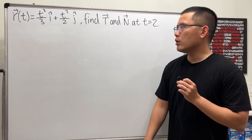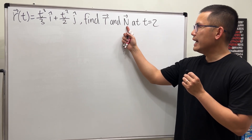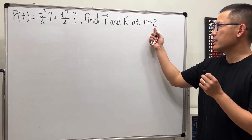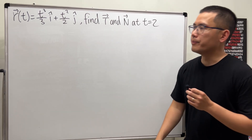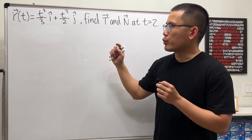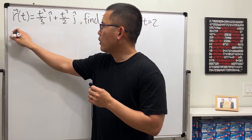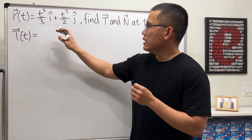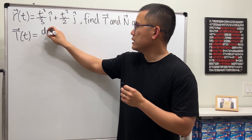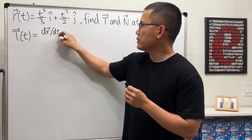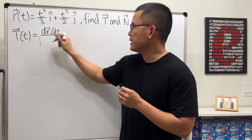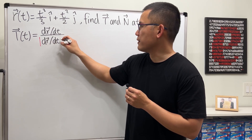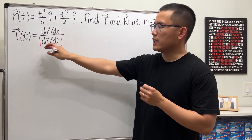I would like to show you another example of finding the unit tangent vector and the unit normal vector, and this time we are going to do it at a specific time value, t is equal to 2. Here we have r already, so let's get started. For the unit tangent vector as a function of t, this is just the derivative of r with respect to t divided by its magnitude — the velocity divided by the speed.